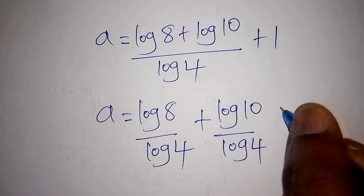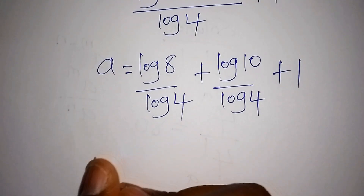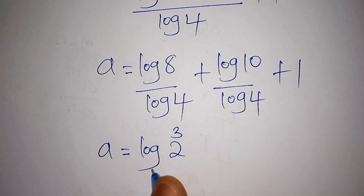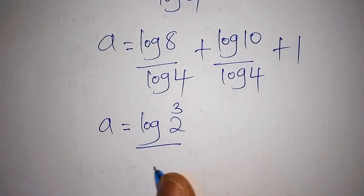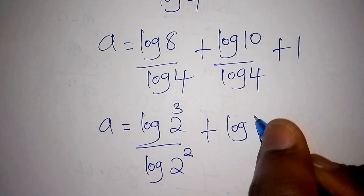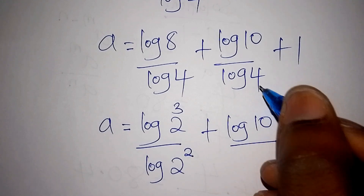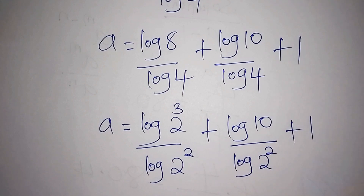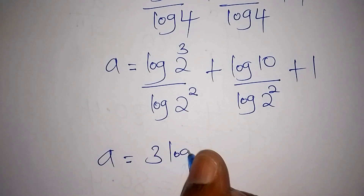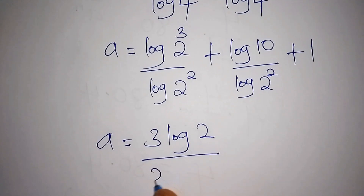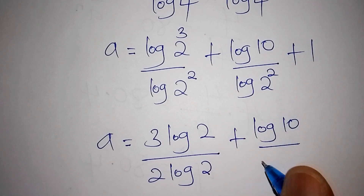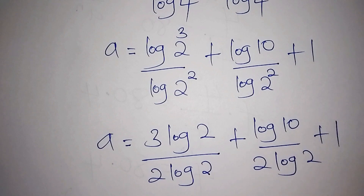Now, log 8 can be written as log 2 to the power of 3, which gives 3 log 2. And log 4 can be written as log 2 to the power of 2, which gives 2 log 2. So a equals 3 log 2 over 2 log 2, plus log 10 over 2 log 2, plus 1.